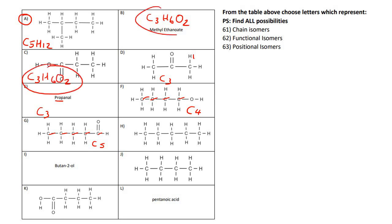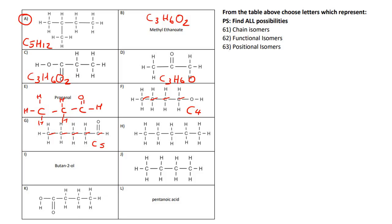This one is going to have six hydrogens and one oxygen. Propanal is an aldehyde, so that's going to have three carbons where the double bond oxygen is on the side. So that's C3, six hydrogens, and one oxygen. Now molecule G is five carbons and ten hydrogens, with one oxygen.